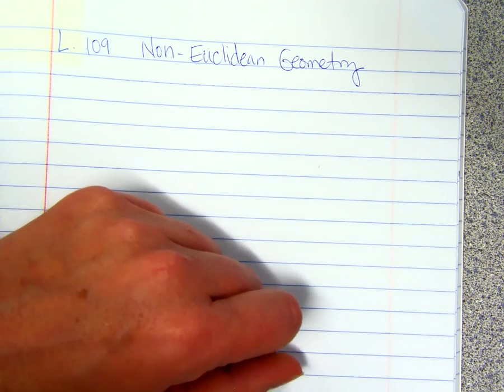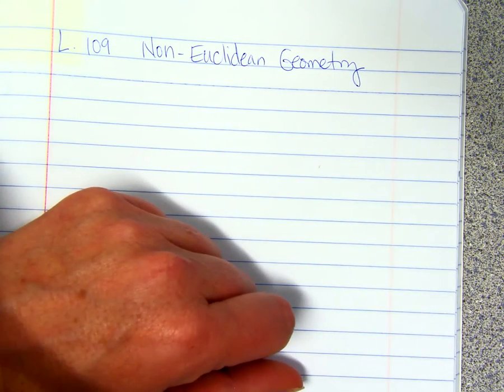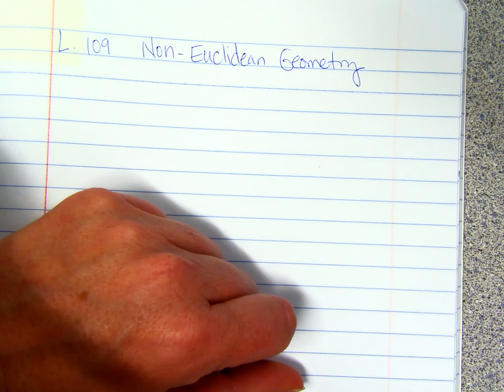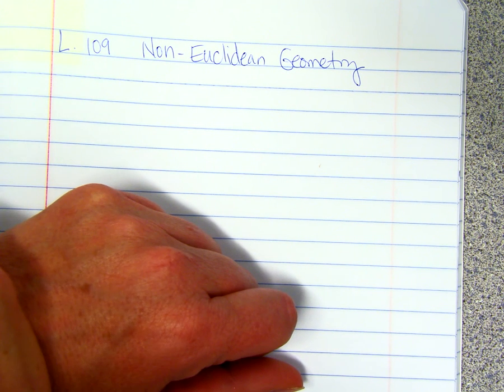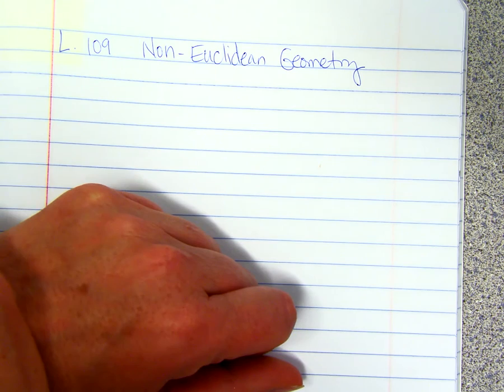Non-Euclidean geometry is based on figures in a curved surface, and the parallel postulate doesn't hold true.